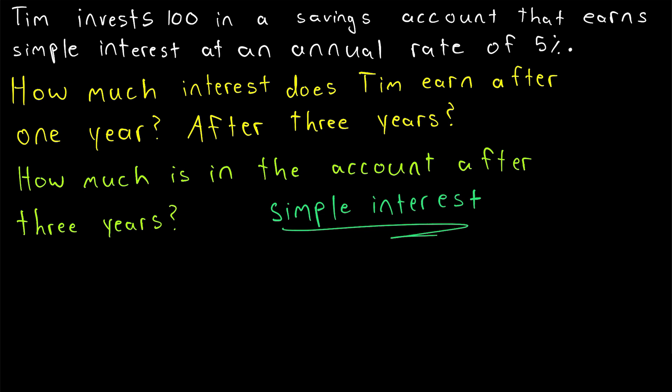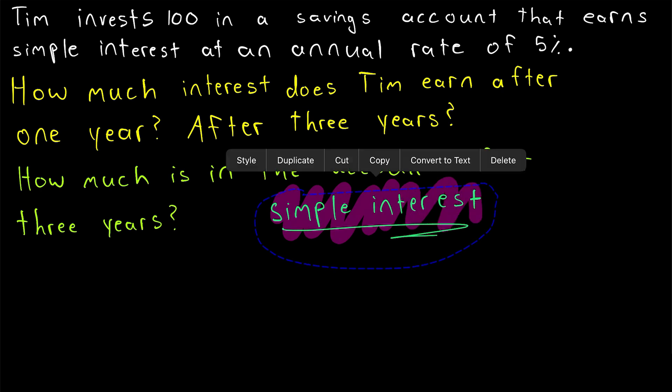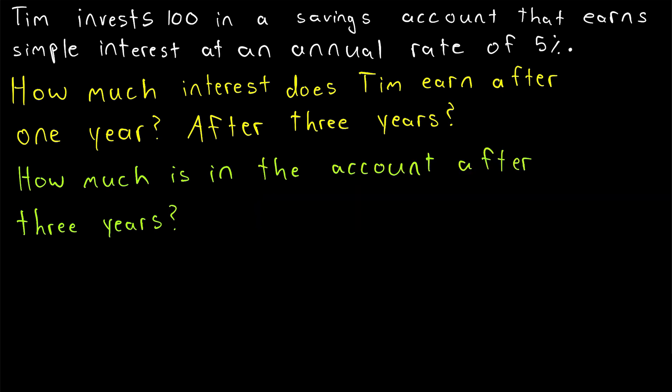There are two types of interest we typically work with: simple interest and compound interest. In this lesson, we are talking about simple interest, which is a bit of a misnomer. Simple interest is really only simple in the way that a fund grows earning simple interest, but for most purposes working with simple interest is a pain. There are situations when it is used and when we might want to use it as an approximation, so let's get into it and see how it works.